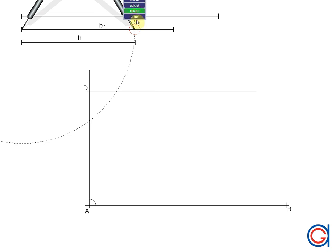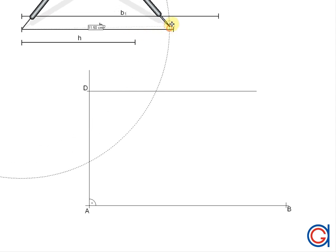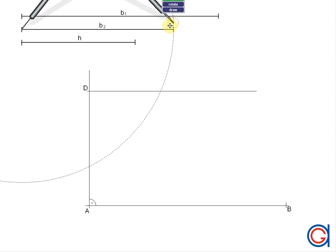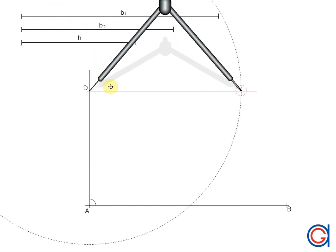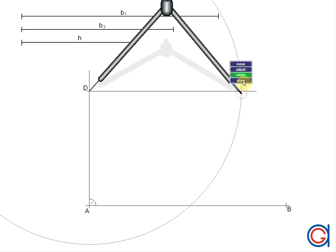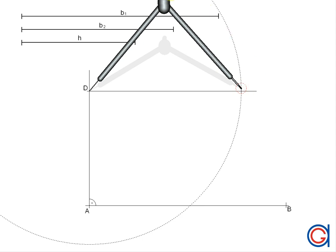Setting our compass on point D and with radius B2, we scribe an arc to the left to get our fourth vertex of the right-angled trapezoid, which we will call C.